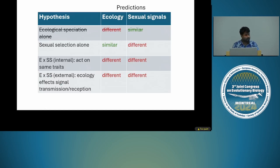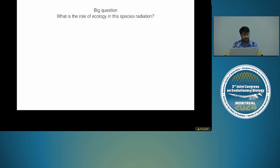What I've shown is that sexual signals are different and female preference for those signals are different. So clearly, it cannot be a case of ecological speciation acting alone. But the ecology in this system is not very well studied, so I wanted to ask: what's the role of ecology in this species radiation? More specifically, do closely related species have different ecology?